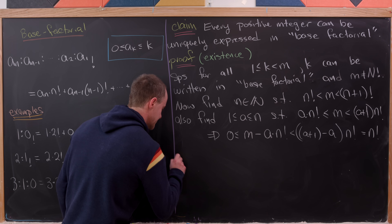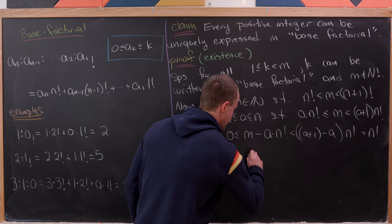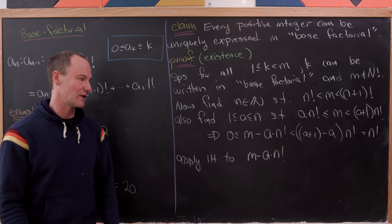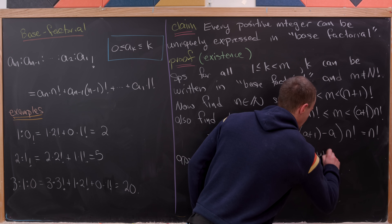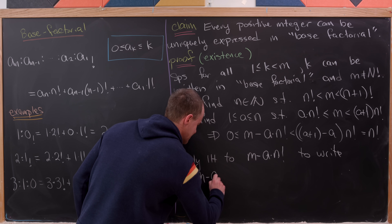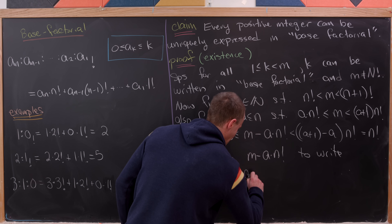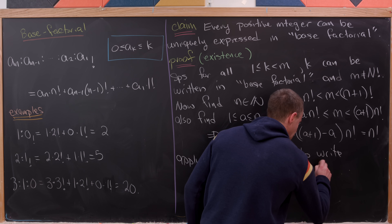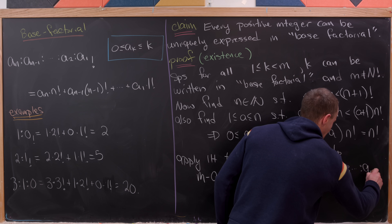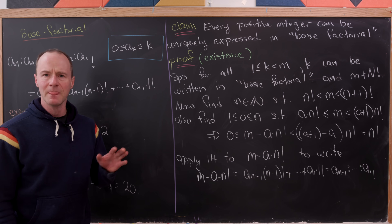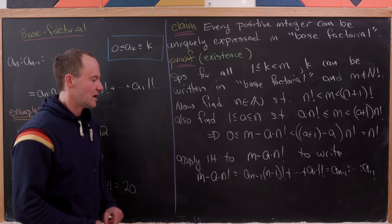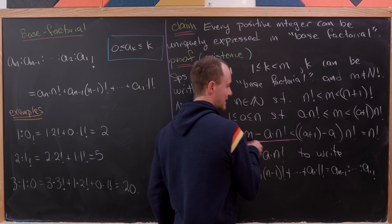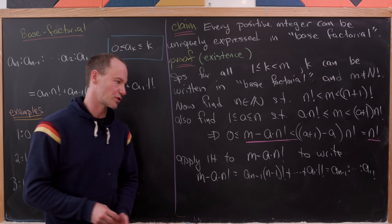Now we'll apply the induction hypothesis to the number m − a·n!. That's why we needed a strong induction hypothesis, because likely that's not equal to m − 1. So we can write m − a·n! as a_{n-1} times (n-1)! plus all the way down to a_1 times 1!, in other words it's (a_{n-1} : ... : a_1) sub factorial. And we know this expansion stops at (n-1)! because our number is strictly less than n!, so it can't have any n! part.